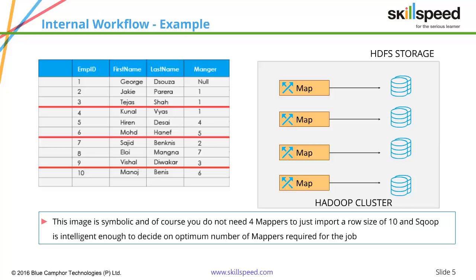This does two things. First, it makes the entire import process faster because rather than a single mapper working on the entire data, you have four or more mappers working simultaneously. Beyond that, it also ensures that the structure is maintained based on the primary ID.